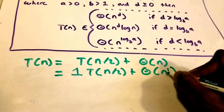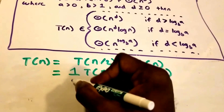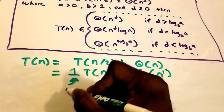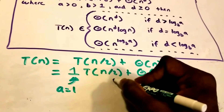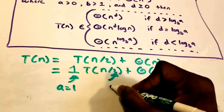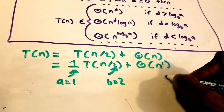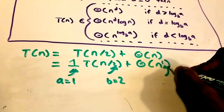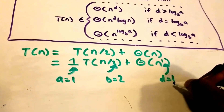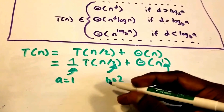Now we can easily identify our variables: a = 1, b = 2, and d = 1. So now we need to figure out what log_b(a) is so we can determine which case to use.